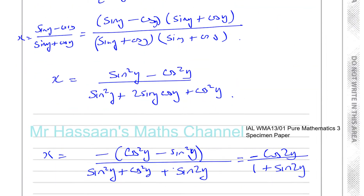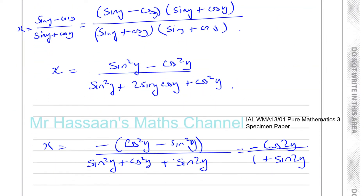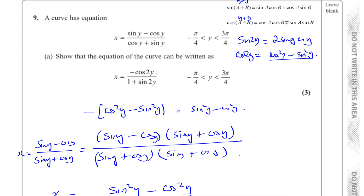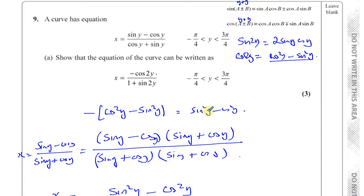Basically I worked from both sides: I worked from the target expression backwards a bit by thinking about the double angle formula, because I could see they have to go from single angles to double angles. Then I worked out that you'd multiply the numerator by sine y plus cosine y, so you'd also multiply the denominator, and then it all worked out. So there's part A done.